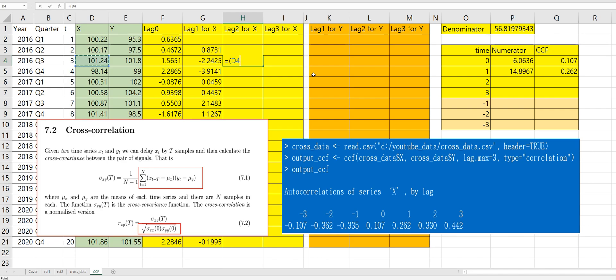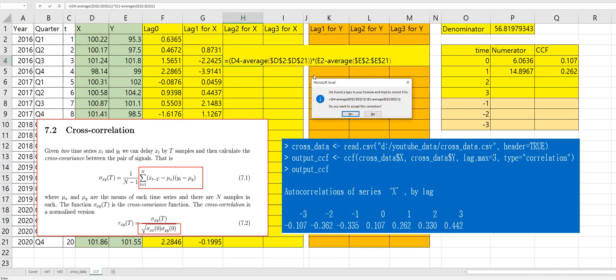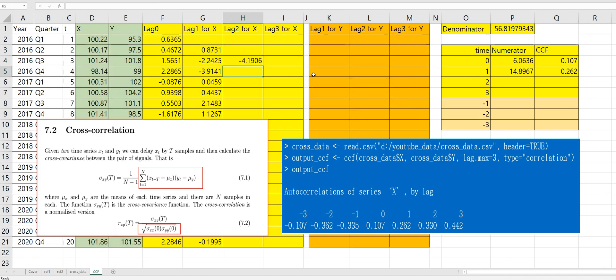And third observation for X minus average of X variable and times first Y value minus average of Y variable.